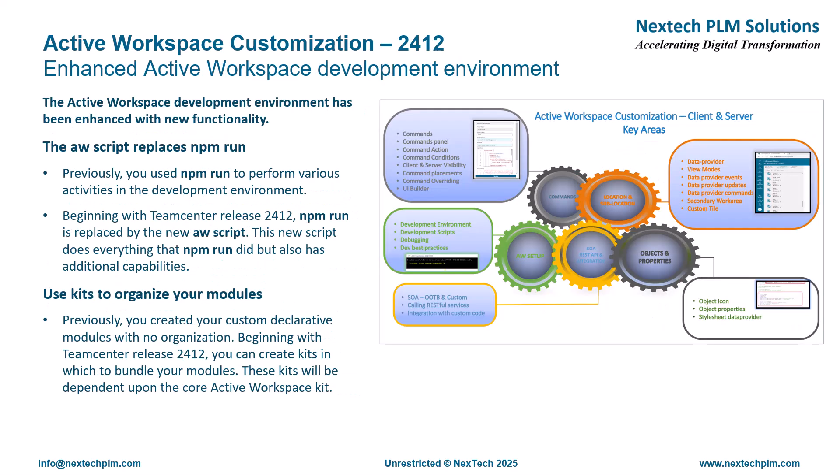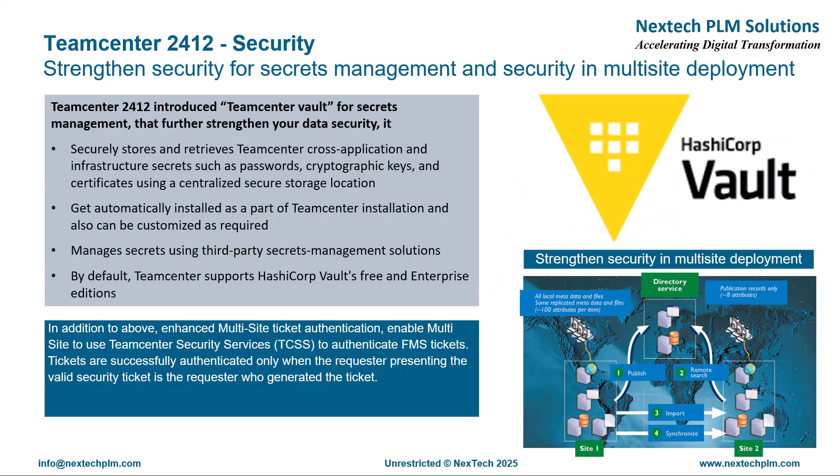With Active Workspace 2412, NPM Run is replaced with the new AW script. This new script does everything that NPM Run did and also has additional capabilities. Teamcenter 2412 enables you to create a kit in which you can bundle your modules. AW script has additional capabilities like migrating code, generating reports, searching specific strings, setting or clearing defaults, running tests, and upgrading to new Siemens web framework easily.